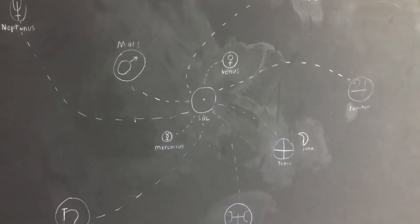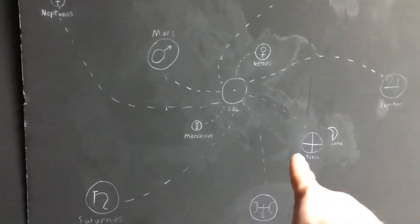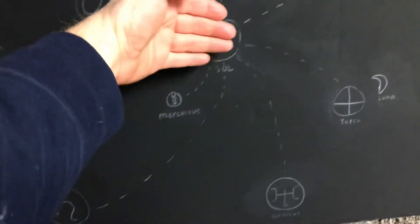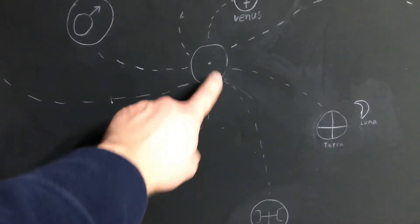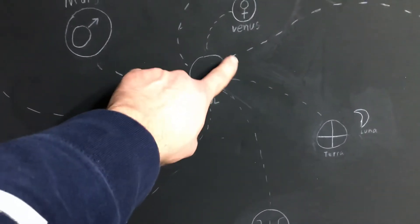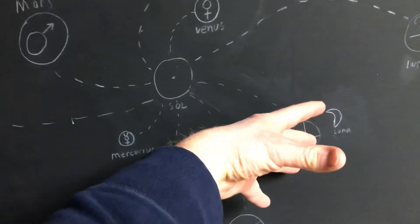And when this Carrington event left the sun, it was a coronal mass ejection. It wasn't as massive as they can be. But part of this corona that was around the sun's magnetic field shot right at earth.